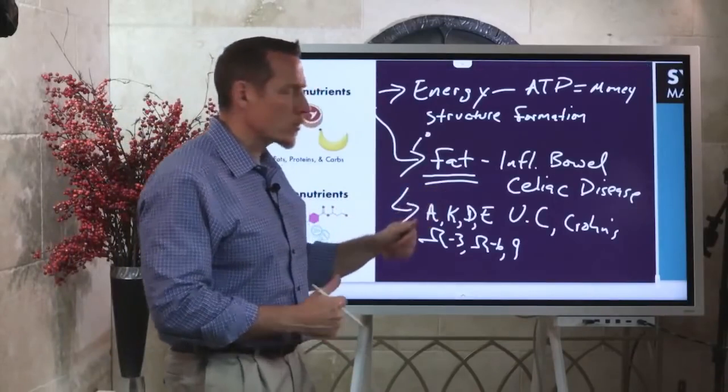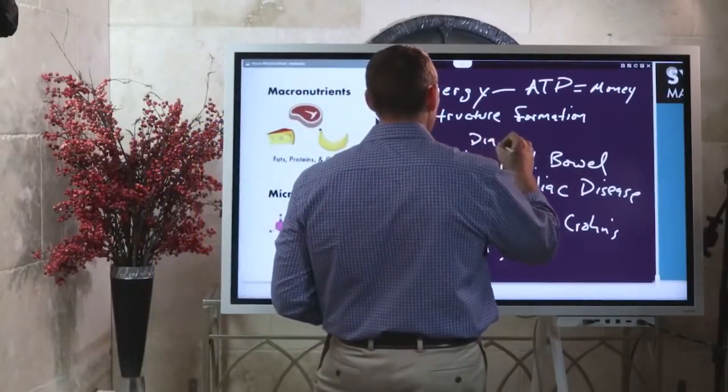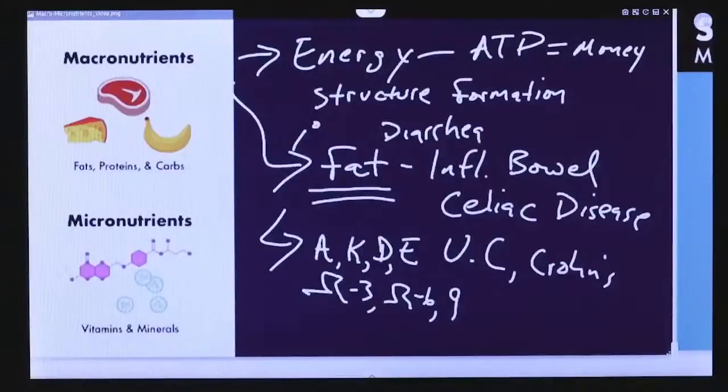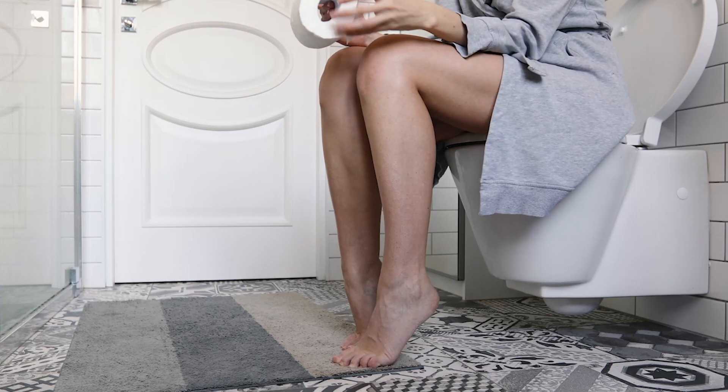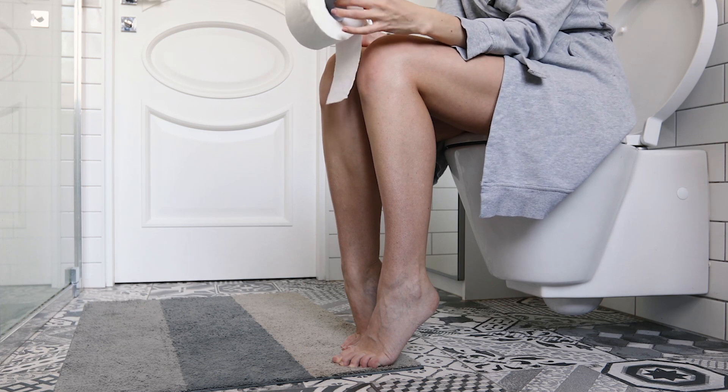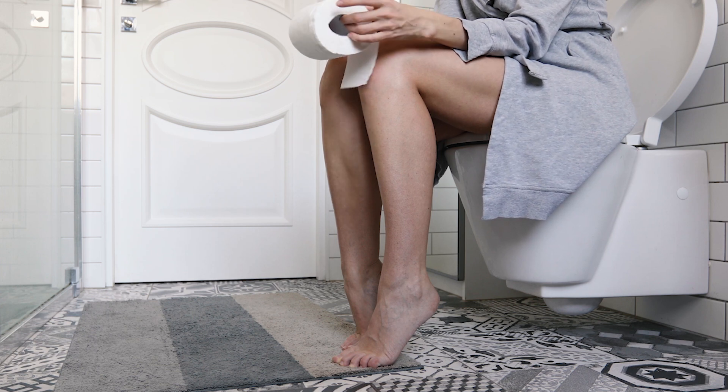Hallmarks of fat malabsorption: if you struggle with chronic diarrhea, or if you have tan or clay-colored stool, then you are malabsorbing fat. That tan or clay discoloration of the stool is actually fat discoloring your stool. If you have chronic diarrhea, there's a great likelihood you're malabsorbing fat and not just fat, but probably all of the macronutrients.